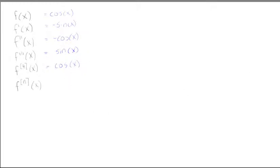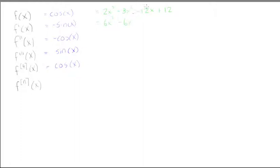Now let's do an example that will end — a cubic function. Let f(x) = 2x³ - 3x² - 12x + 12. The first derivative is 6x² - 6x - 12, where the constant term becomes zero and is ignored.